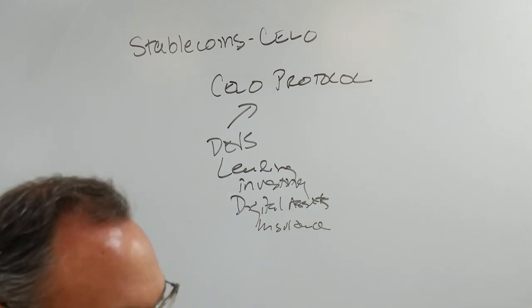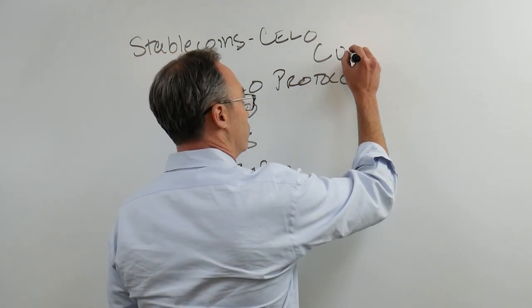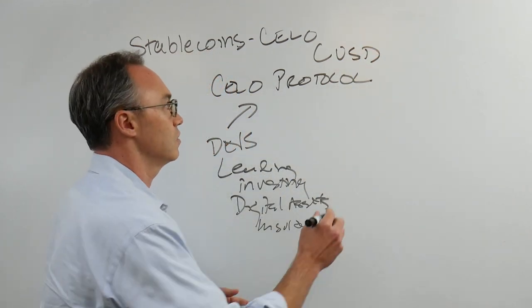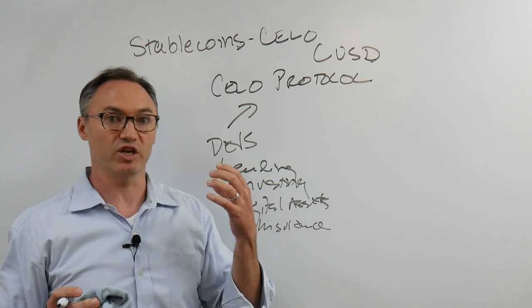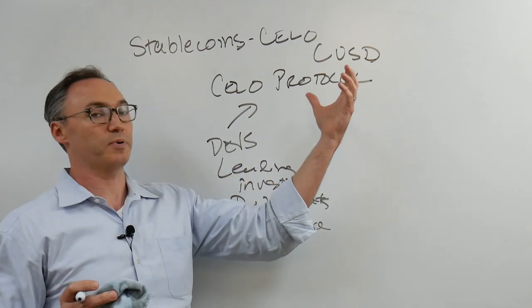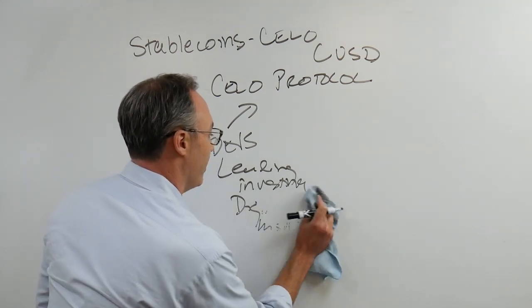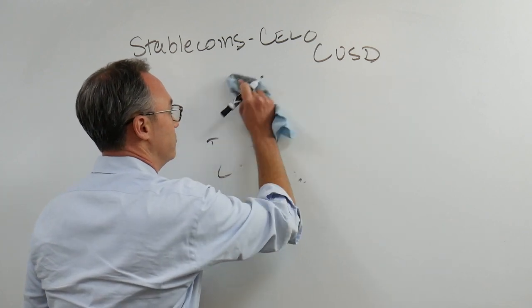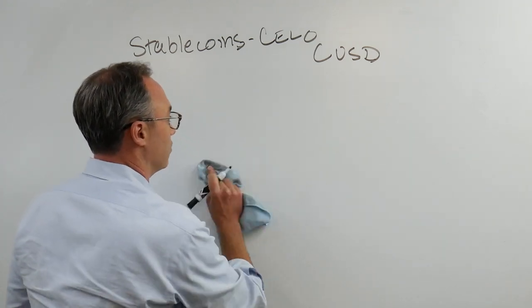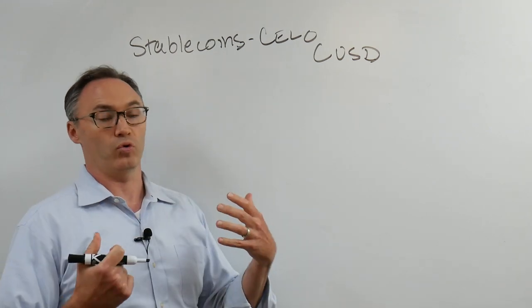So what Celo had to do was build the Celo dollar, the CUSD. Their first stablecoin is pegged one-to-one to the U.S. dollar. Now, what they have overall in the Celo network - and this talk is meant to be about the Celo dollar, the stablecoin - but we have to talk a bit about the whole network.